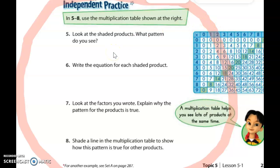Factors are those two numbers that you multiply. So for example, if you have three times four equals twelve, three and four are factors and twelve is the product.